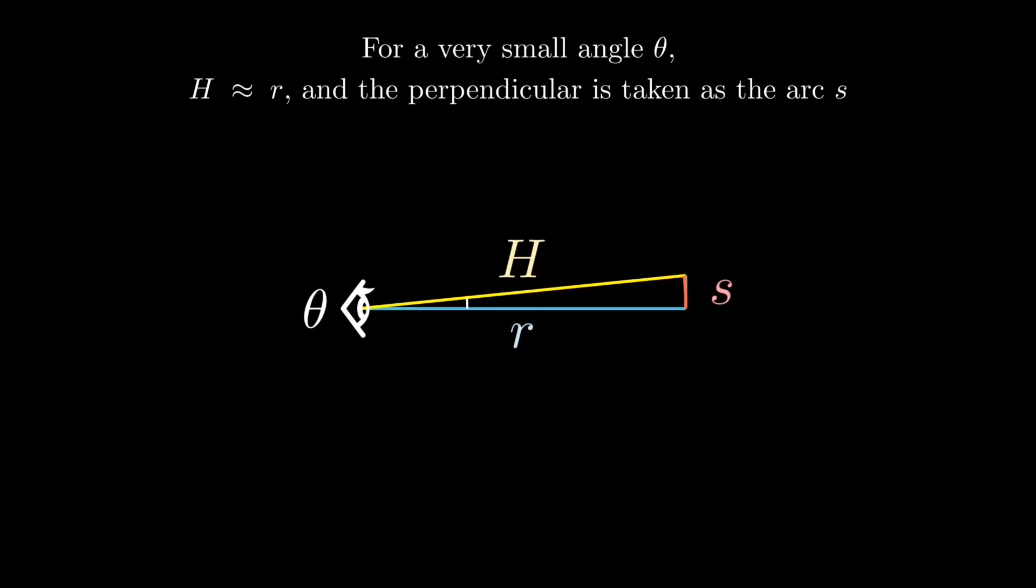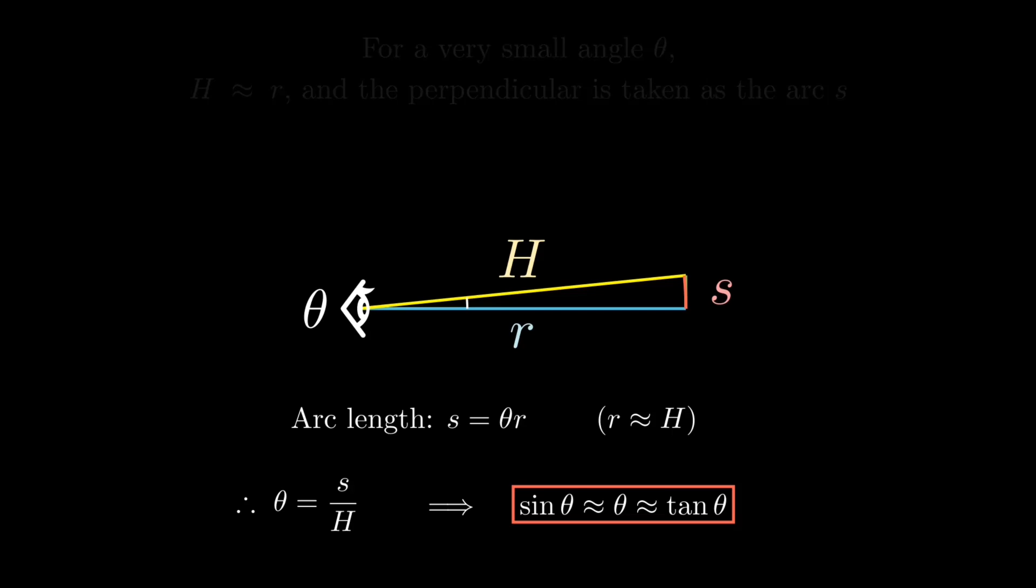The arc length S, as we know, equals R times theta, and since R is approximately equal to H, it thus follows that theta equals S over H, which is the same as sine theta for this small angle. And since R and H are almost same, then theta can also be written as S over R or S over H, and thus approaches theta. In other words, for these very small angles, sine theta, tan theta, and theta itself become nearly indistinguishable.